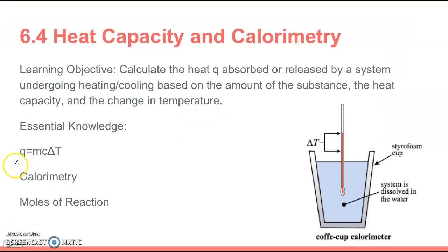The essential knowledge for this deals with working with this equation: Q equals mc delta T. This equation is on your equation sheet. Q represents heat and is measured in joules. M is mass, measured in grams. C is specific heat, a property of a substance that you don't have to memorize. The units are usually joules per gram degree Celsius.